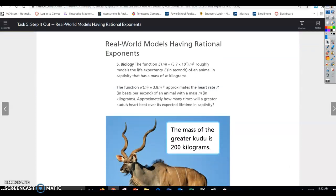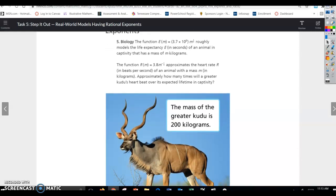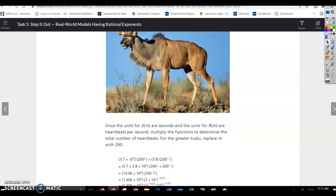Real world models having rational exponents. Biology. The function E of m roughly models the life expectancy e in seconds of an animal in captivity that has a mass of m kilograms. The function r of m approximates the heart rate r in beats per second of an animal with a mass m in kilograms. Approximately how many times will a greater kudu's heart beat over its expected lifetime in capacity? So you can see the mass of the greater kudu is 200 kilograms.